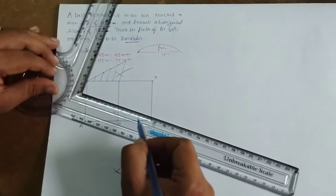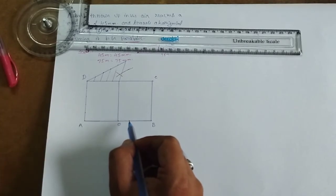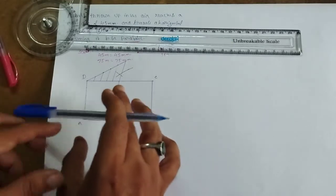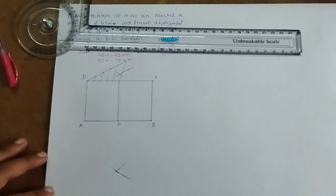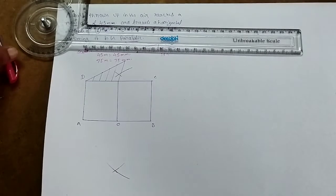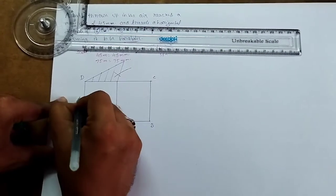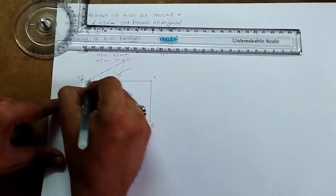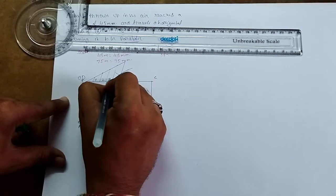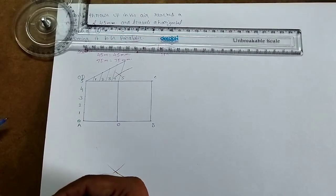Now we divide into equal number of parts. Number the division points - this is 0, then 1, 2, 3, 4, 5.